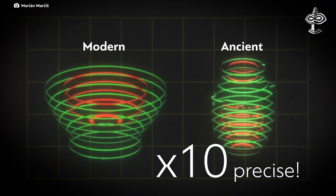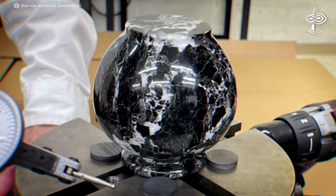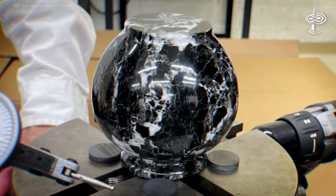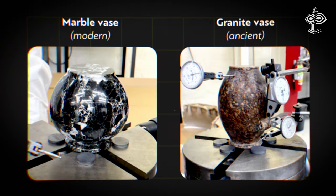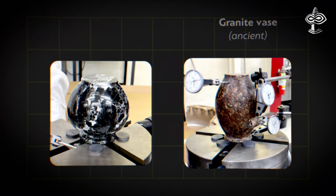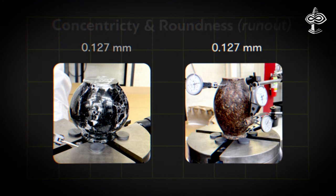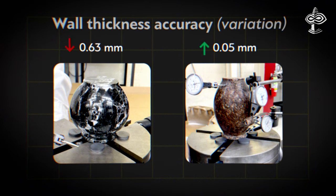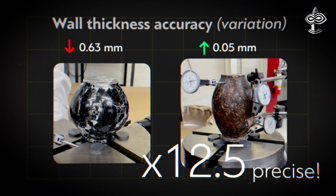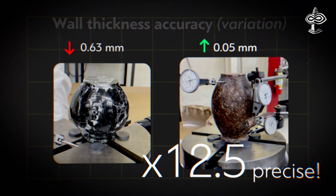The vase scan project conducted a second comparison with a machined marble vase, which is a softer-than-granite medium. The findings were similar in terms of concentricity and roundness. However, in wall thickness accuracy, the ancient vessel was 12.5 times more precise than the modern one.